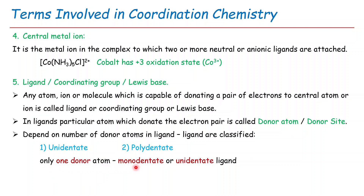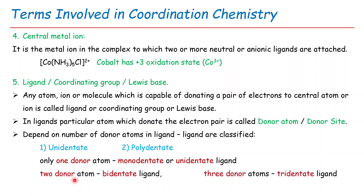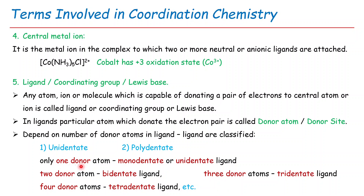When a ligand has only one donor atom, it is called a monodentate or unidentate ligand. When it has two donor atoms, it is called a bidentate ligand. When it has three donor atoms, it is tridentate. When it has four donor atoms, it is tetradentate, and so on. In summary, ligands with two or more donor atoms belong to the polydentate ligand class.